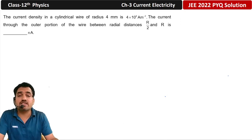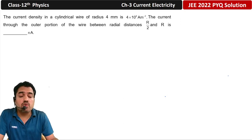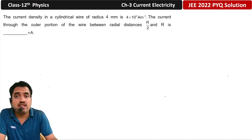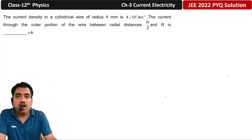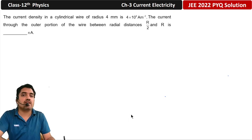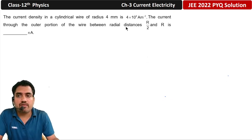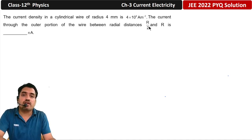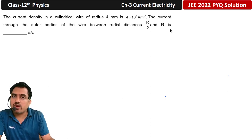Hello my dear students. We are talking about JEE 2022 previous year questions of the current electricity chapter. The question is: the current density of a cylindrical wire of radius 4 mm is 4×10⁶ ampere per meter square. Find the current through the outer portion of the wire between the radial distance r = R/2 to r = R.